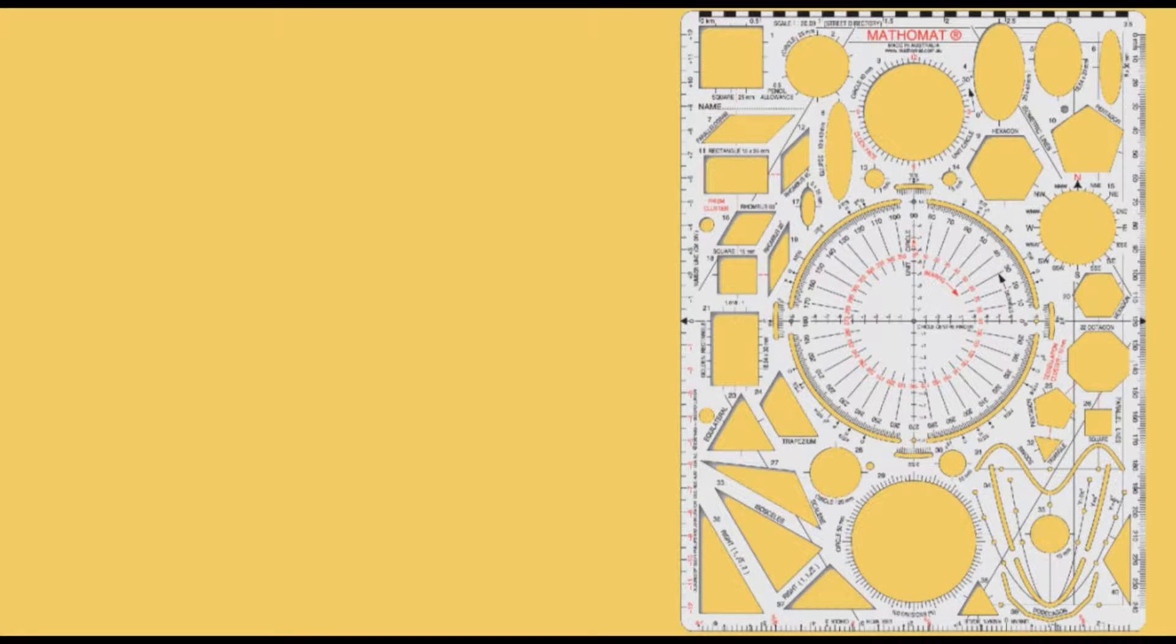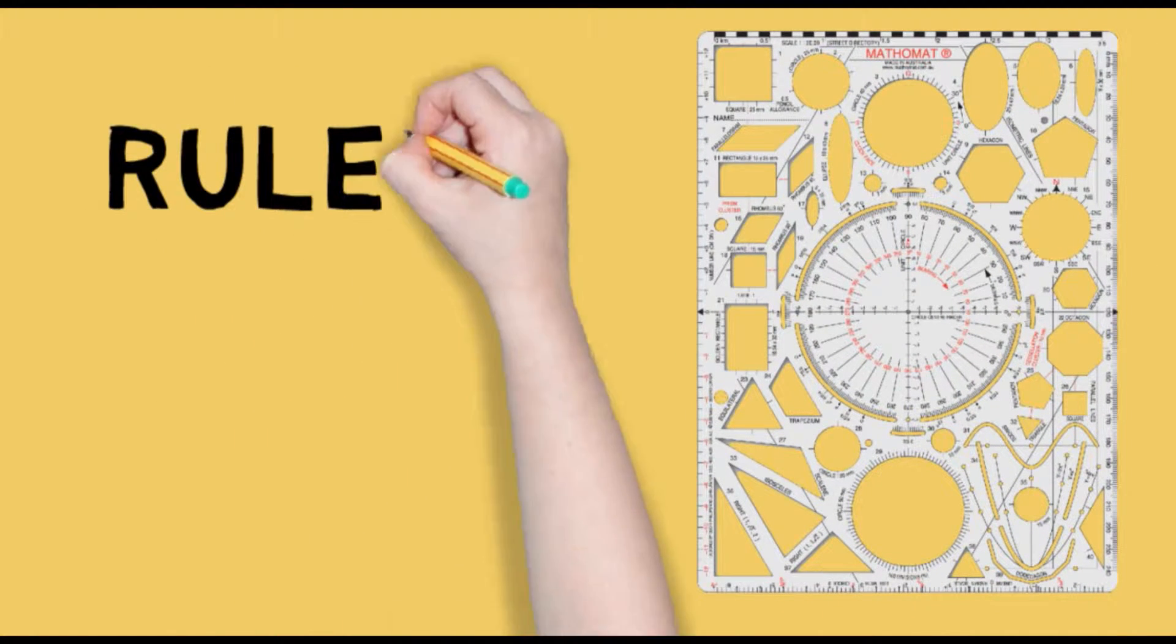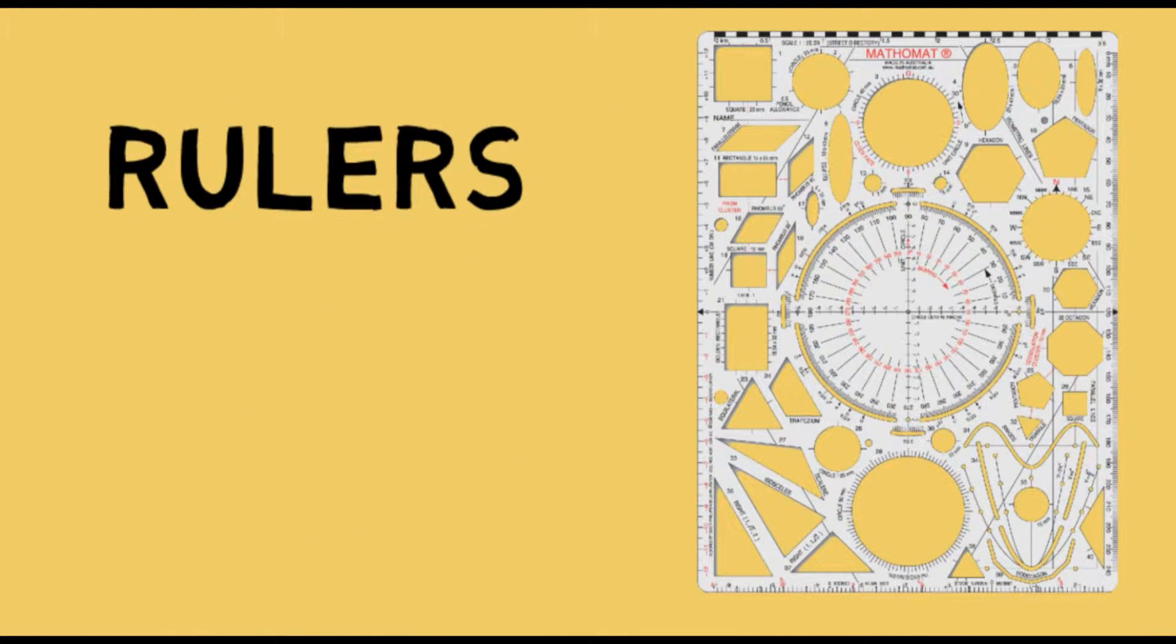The Mathemat drawing template. Rulers. The template has four rulers: A street directory scale ruler of 1 to 20,000. A millimetre scale ruler 0 to 240 millimetres. A number line ruler in two colours. A radian scale ruler which can be used with a unit circle figure 3.